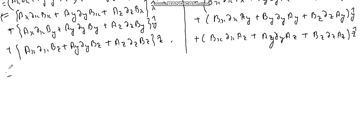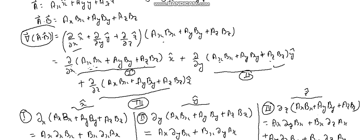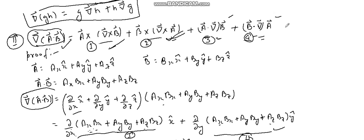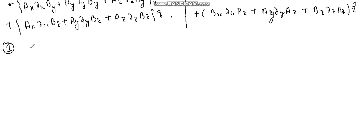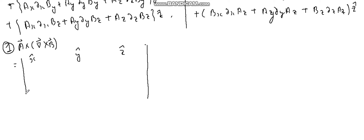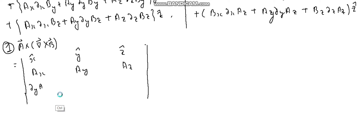Now we will expand the first and second terms. The first term on the RHS is a cross del of B — that is, a × (∇ × B). We know ∇ × B, so let me write it directly with x-cap, y-cap, and z-cap components. The x-component of ∇ × B is del_y B_z minus del_z B_y.